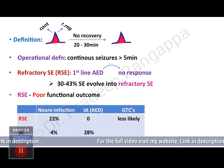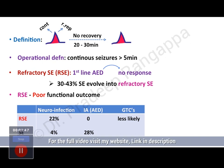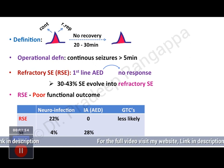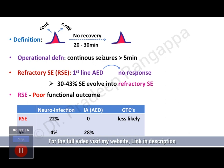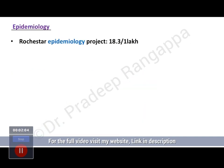From US data, the commonest cause of refractory status epilepticus is neuro-infection, accounting for 22 percent of cases. However, for breakthrough seizures or status epilepticus in general, the commonest cause is non-compliance with anti-epileptic drugs. When refractory status sets in, neuro-infection is touted to be the most likely cause.